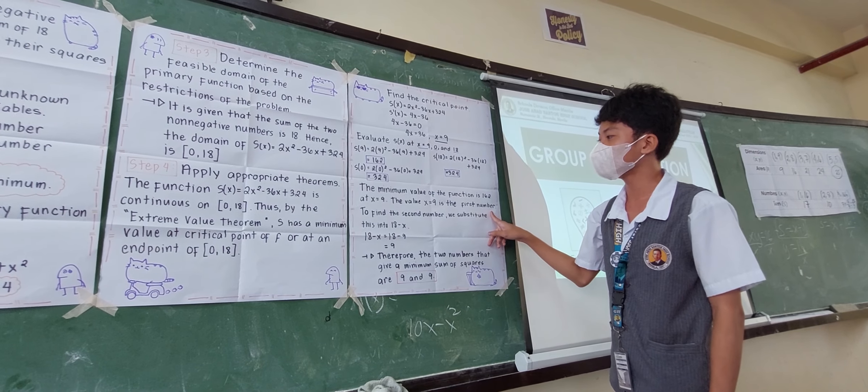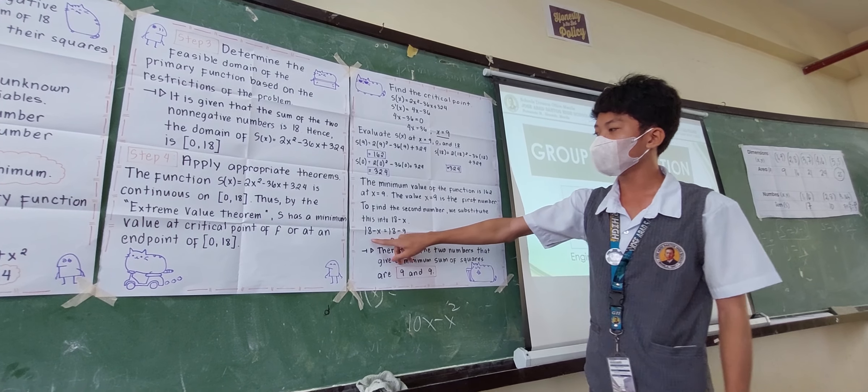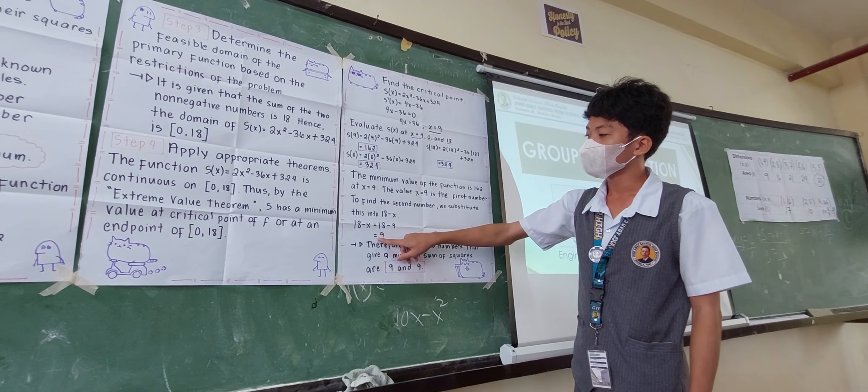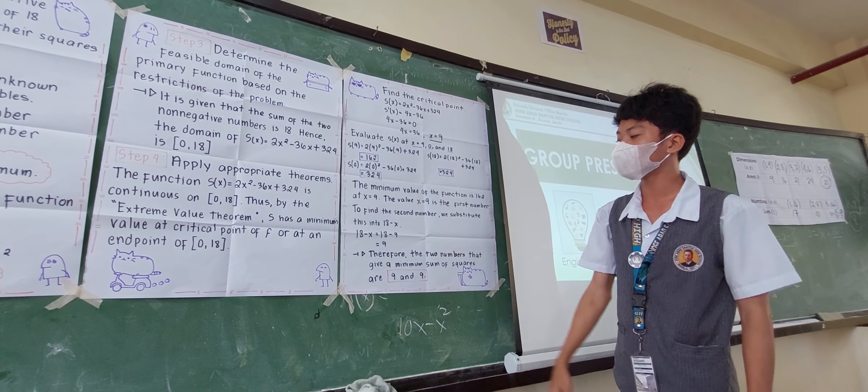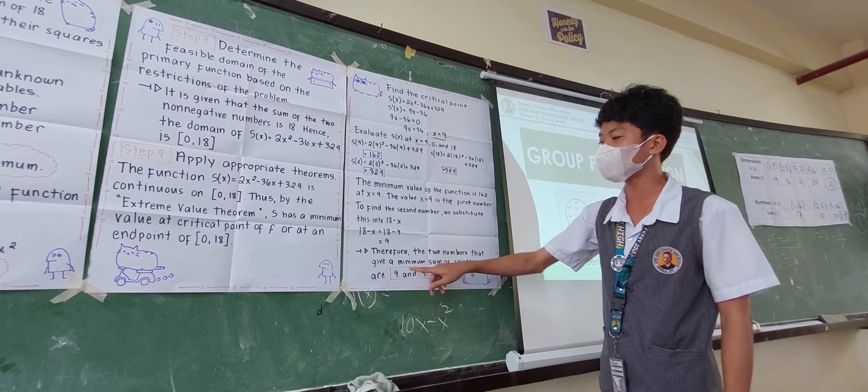To find the second number, we substitute this into 18 minus X. 18 minus X is equal to 18 minus 9, and 18 minus 9 is equal to 9. Therefore, the two numbers that give a minimum sum of squares are 9 and 9.